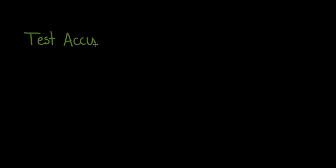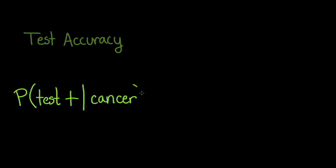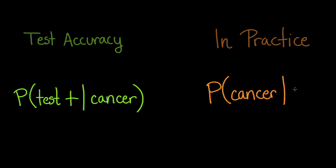Why is this so? The accuracy of the test actually reflects the conditional probability that one tests positive given that one has cancer. But in practice, what you want to know is the conditional probability that you have cancer given that you test positive. These probabilities are not the same. Whenever we take medical tests or perform experiments, it is important to understand what events our results are conditioned on and how that might affect the accuracy of our conclusions.